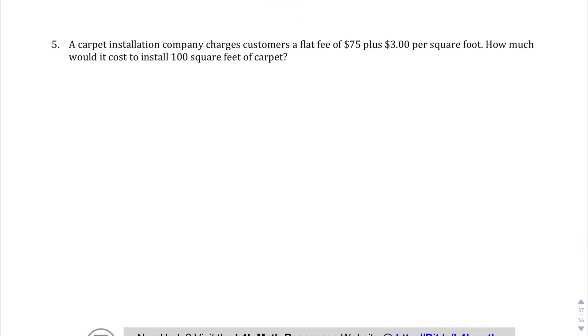Question number five. A carpet installation company charges customers a flat fee of $75 and $3 per square foot. So the total is going to be the fee plus the rate. $3 per square foot. Let's put F for foot. How much would it cost to install 100 square feet?